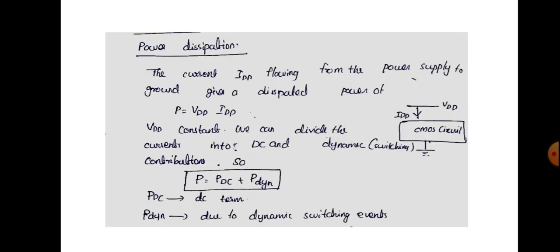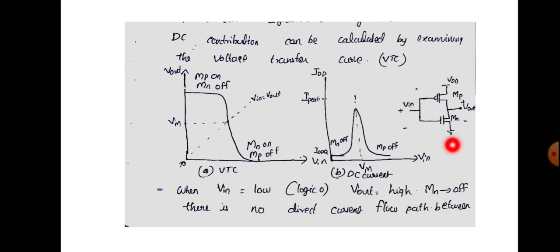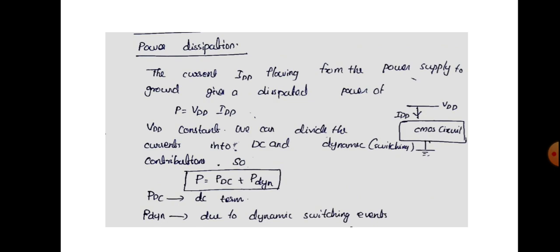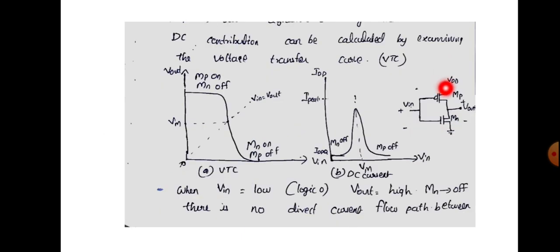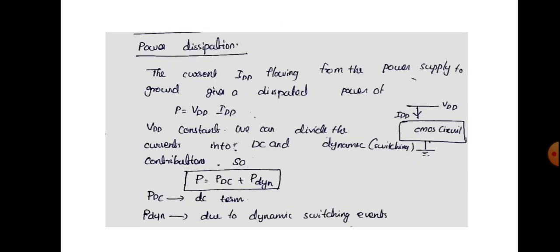In this session we are going to discuss power dissipation in CMOS inverter. The CMOS inverter circuit has a PMOS (MP) and NMOS (MN). The current IDD flowing from the power supply to ground gives a dissipated power PE equal to VDD into IDD. VDD is constant since it is a supply voltage.